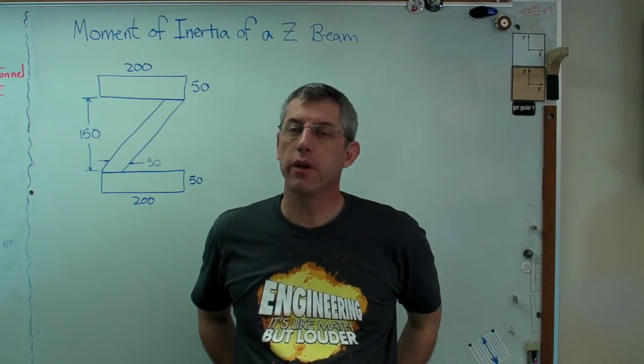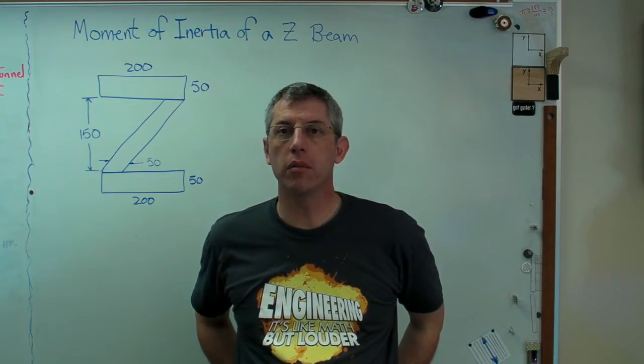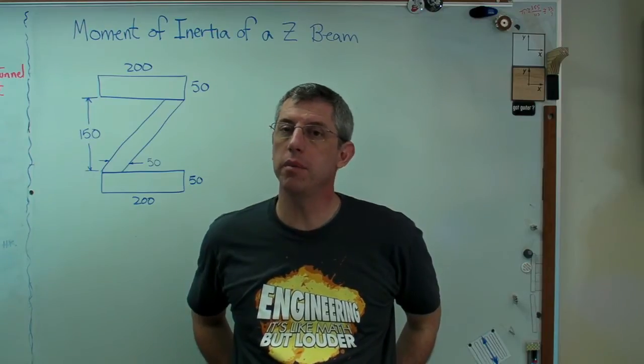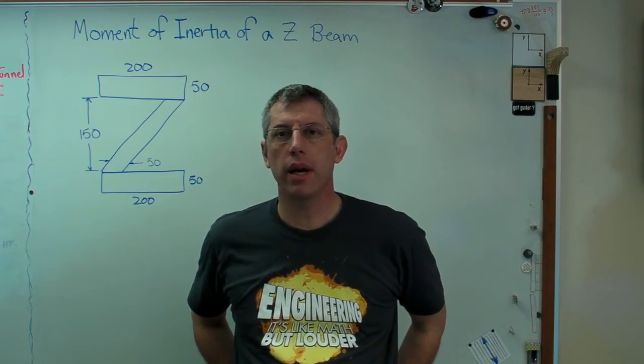Hi folks. I got a question the other day about how to calculate the area moment of inertia of a Z-shaped beam, and I'd like to do that now.